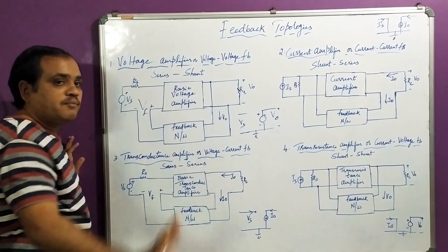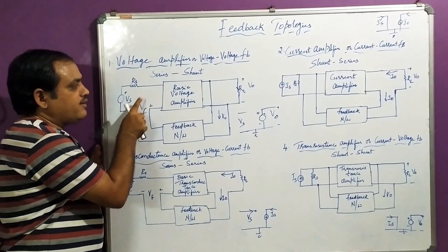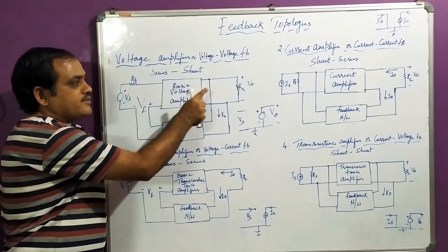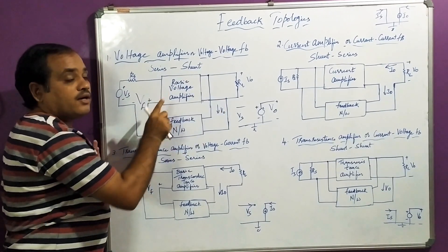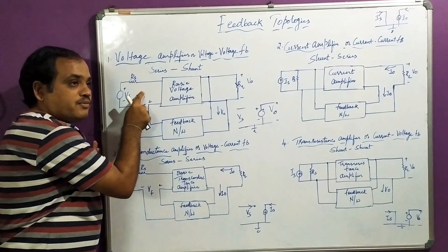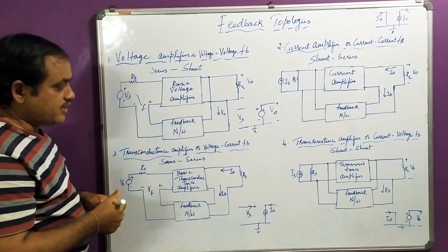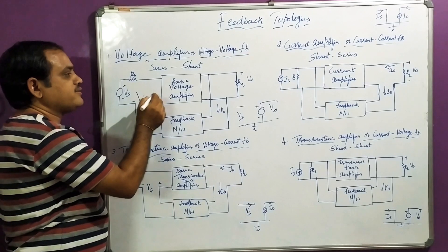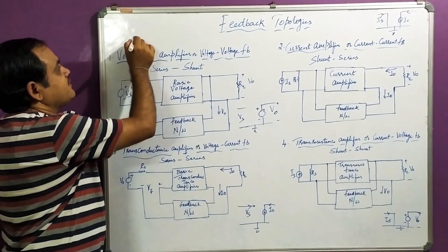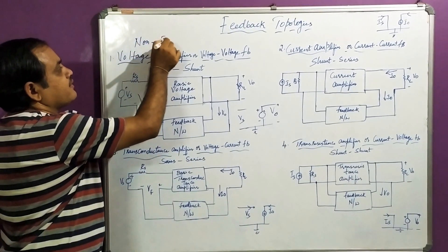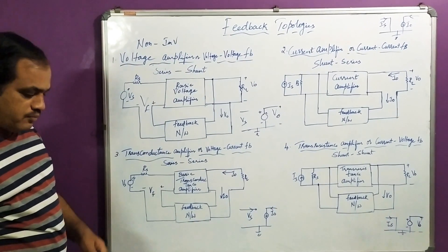This is about the voltage amplifier. The characteristics of a voltage amplifier are: very high input impedance and very low output impedance. An example for this is the non-inverting amplifier. Because of this feedback connection structure, this amplifier is also called as series-shunt amplifier.